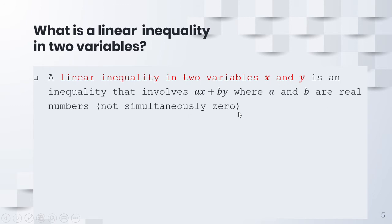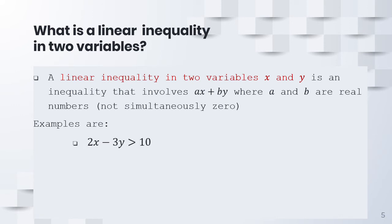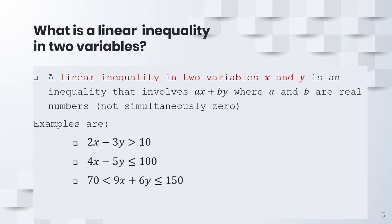Here are some examples of linear inequalities in two variables: 2x minus 3y is greater than 10; 4x minus 5y is less than or equal to 100; 9x plus 6y is greater than 70 but less than or equal to 150; and 2x plus 5y is greater than 50.